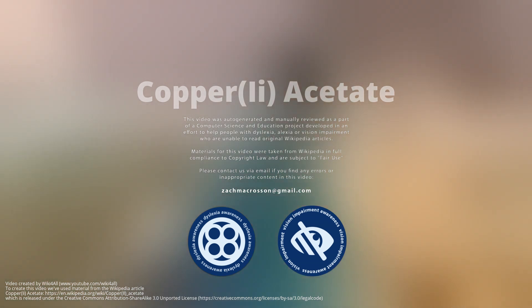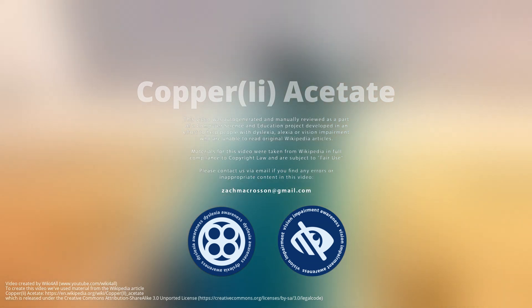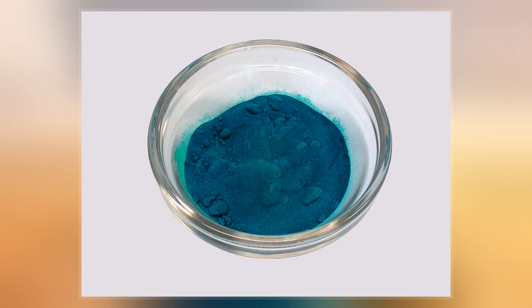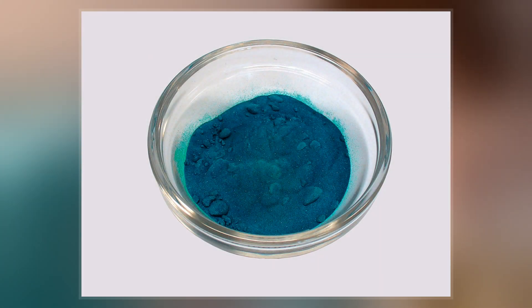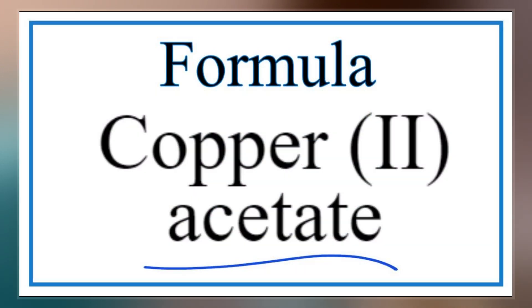Copper acetate, also referred to as cupric acetate, is the chemical compound with the formula Cu₂(OAc)₂, where OAc is acetate. The hydrated derivative, which contains one molecule of water for each Cu atom, is available commercially.